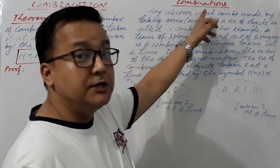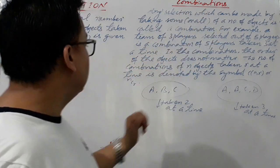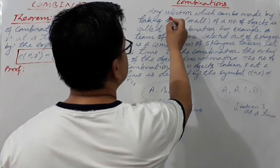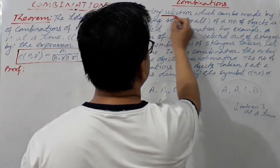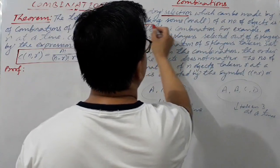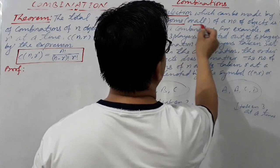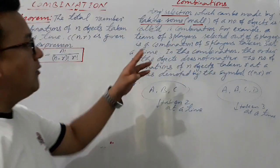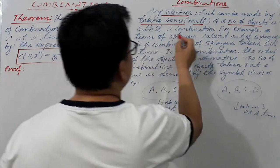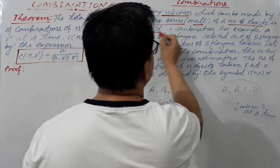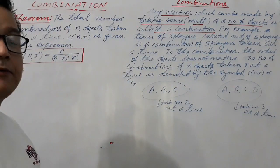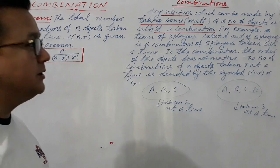Here I have written the definition of combination. Any selection — especially, a selection which can be made taking some or all of a number of objects — is called a combination. So this is the definition of combination.